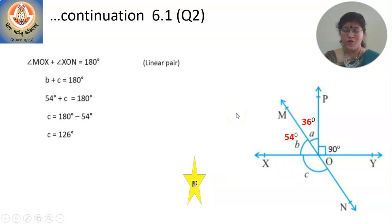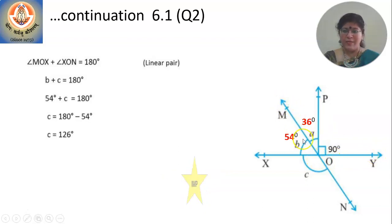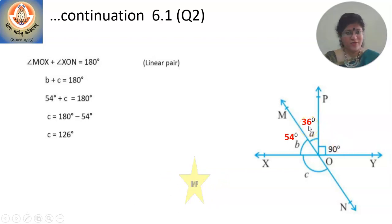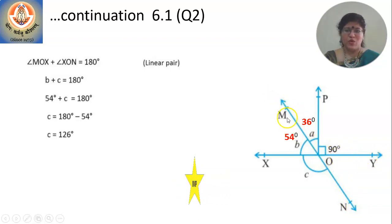This is one way of solving the problem. There is also another method. Instead of using a linear pair, calculate angle MOY: MOY is A plus 90, which is 36 plus 90, giving angle MOY equal to 126 degrees. Since angle XON is vertically opposite to angle MOY, angle XON is also 126 degrees.